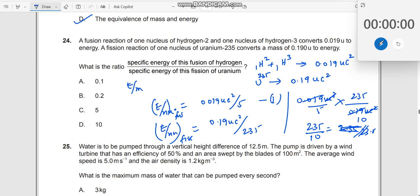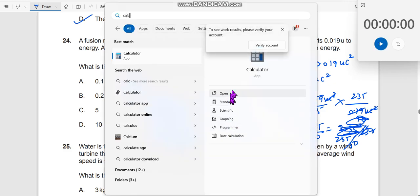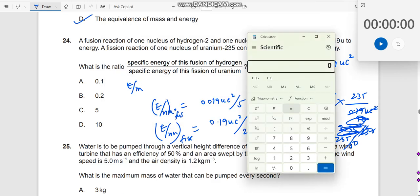What is the mistake? Sorry, here you have 5 here, 5 into 10 is 50. So now 235 by 50. When you use your calculator, let me use my calculator to get the correct answer.